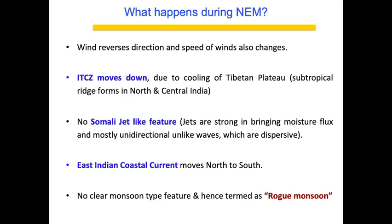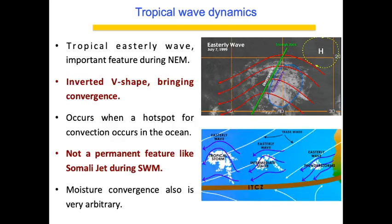There is no permanent pool of warm water in the Bay of Bengal during this season. The EICC moves north to south and degenerates, providing no clean signature over the ocean. Hence there is no clean monsoon feature, and that's why we call this a rogue monsoon. The only feature one can pinpoint during Northeast monsoon is the tropical easterly wave in the atmosphere.